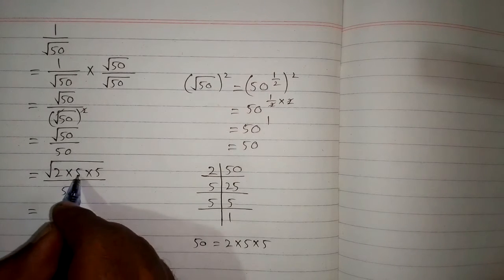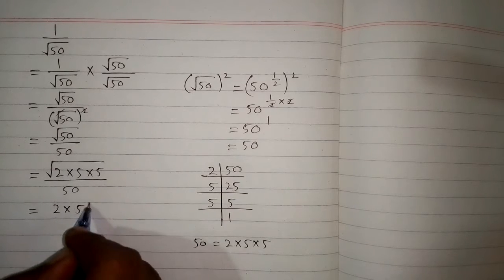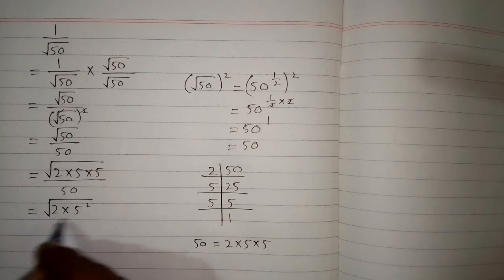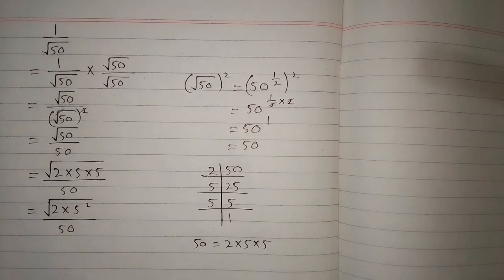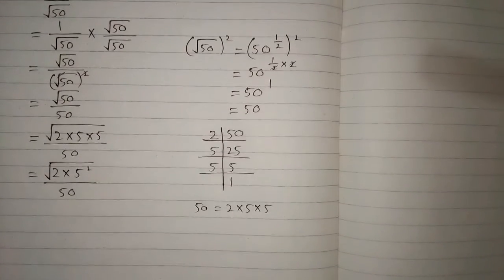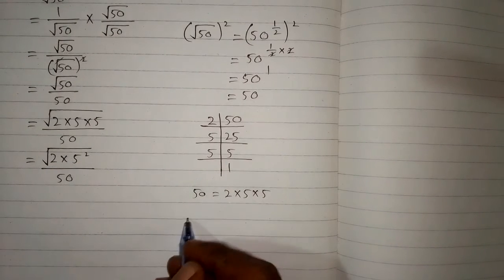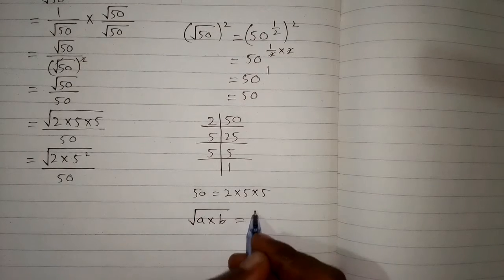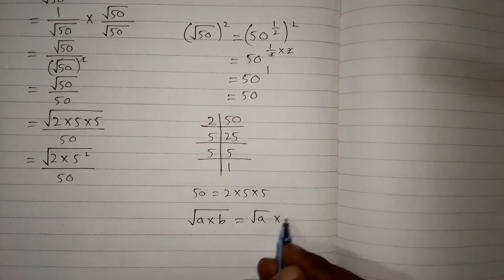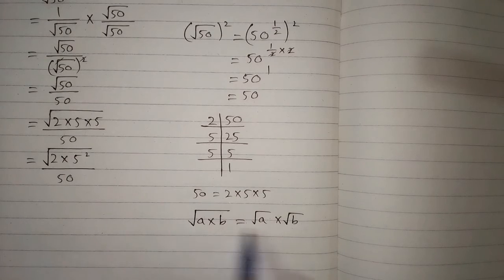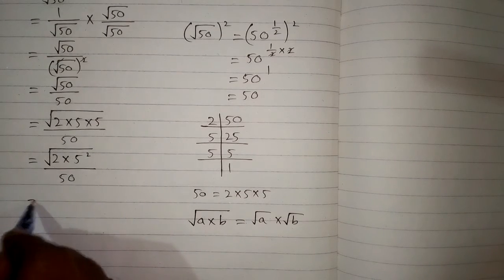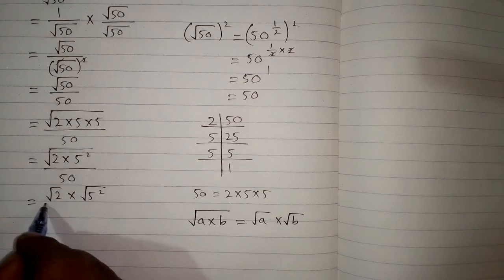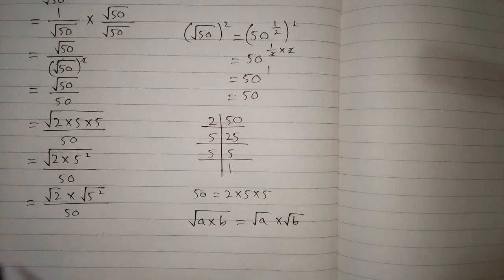Now we know that 5 multiplied by 5 is 5 squared, so we can write square root of 2 multiplied by 5 squared upon 50. We apply the rule that square root of a multiplied by b equals square root of a multiplied by square root of b. Applying this rule, we have square root of 2 multiplied by square root of 5 squared upon 50.